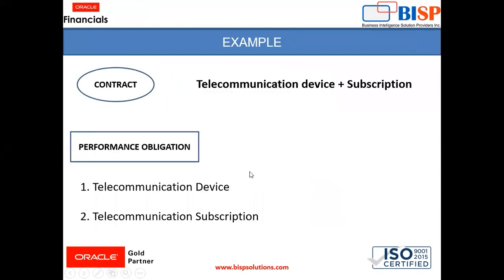Here is a small example to describe what is a performance obligation. Consider a contract of a telecommunication device plus subscription. In this contract, there are two performance obligations we need to satisfy: first, the telecommunication device, and second, the telecommunication subscription.